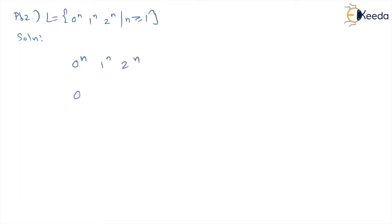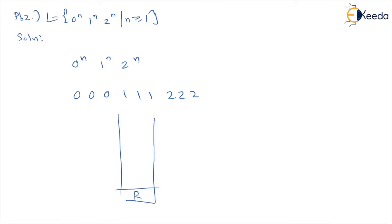we can assume n = 3, giving us 000, 111, 222. The logic could be: for every 0, push x; for every 1, push y; and for every 2, pop x or y. So if I have a stack — bottom is r — I get a 0, push x; get another 0, push x; get another 0, push x. Now for all the 1s, if I keep popping x, I am unable to keep track of 2.